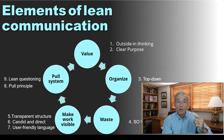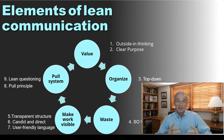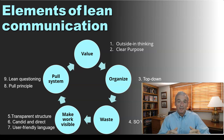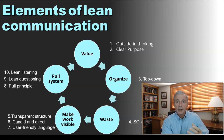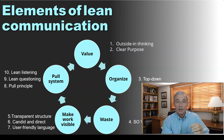To make work visible, there are three keys: transparent structure, being candid and direct, and user-friendly language. For the pull system, the first key is the pull principle itself — letting the listener dictate what information they need and when. That requires two additional skills: the ability to ask questions, because we need to make sure the message is being received, and we can even use questions to get listeners to tell us what we want them to hear. And finally, we also have to apply lean listening to make sure we are understanding what the listener values and needs from us. So these are the ten elements of lean communication.